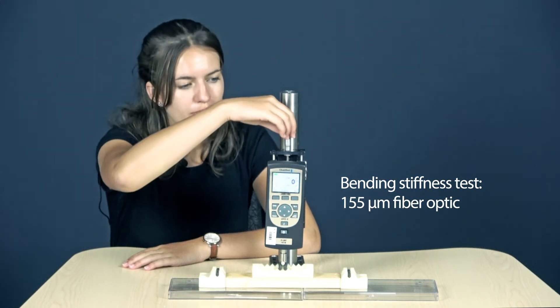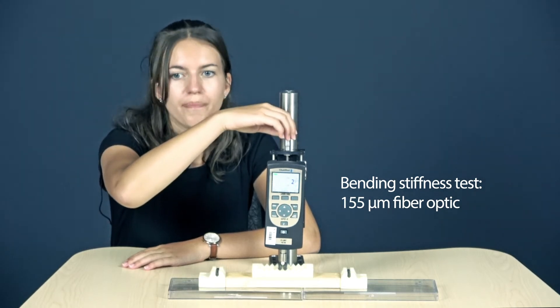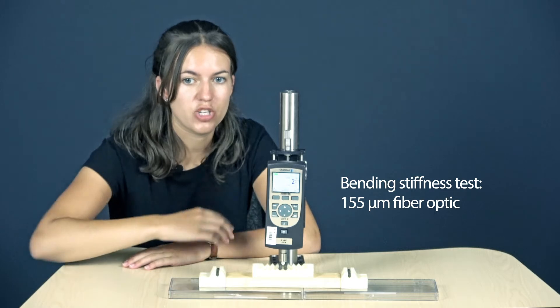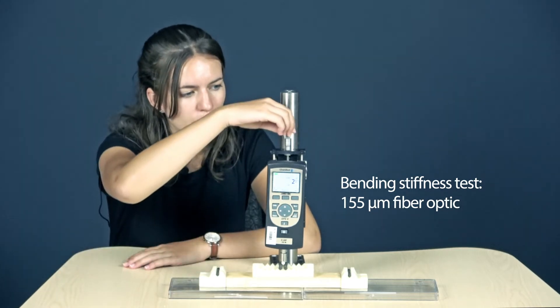The load cell is lowered for 0.5 mm and the force applied on the fiber optic is measured until the load cell is lowered for 2 mm.